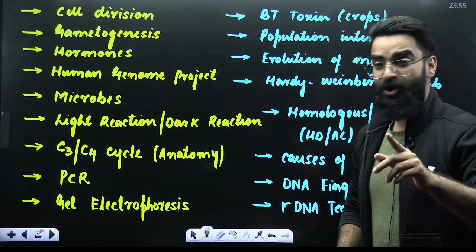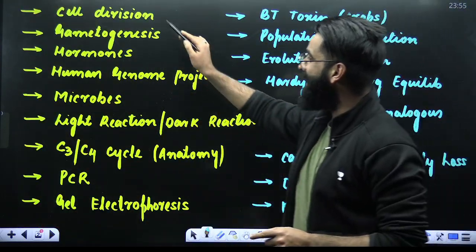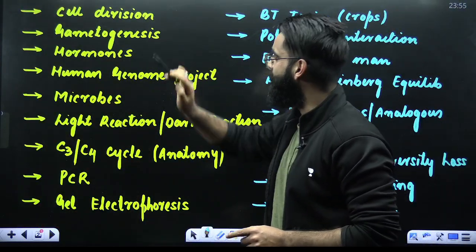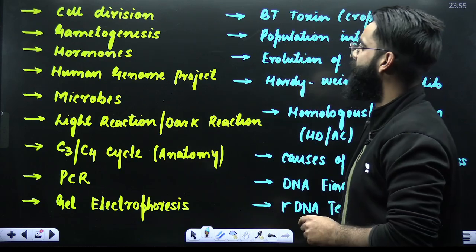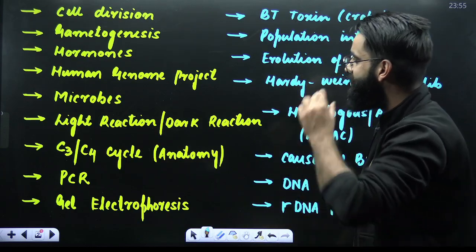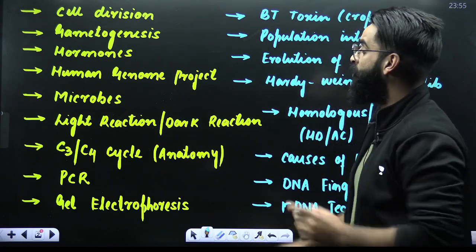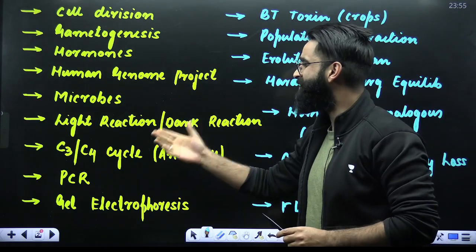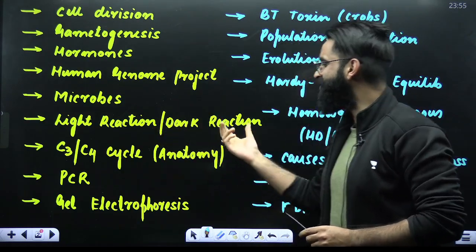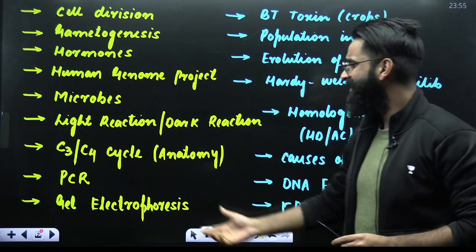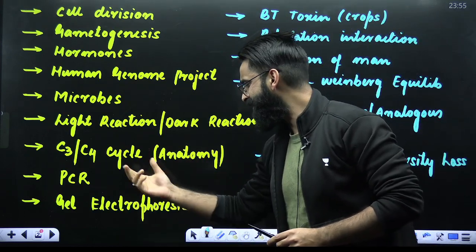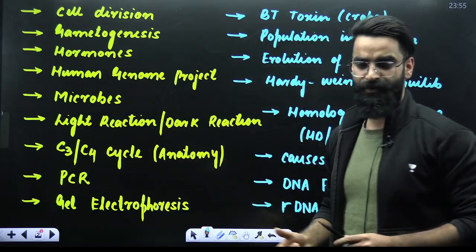Let's have a look at the first topic. It is cell division, then you have got gametogenesis, hormones, human genome project, microbes, light reaction, dark reaction, C3/C4 cycle, PCR, and gel electrophoresis.